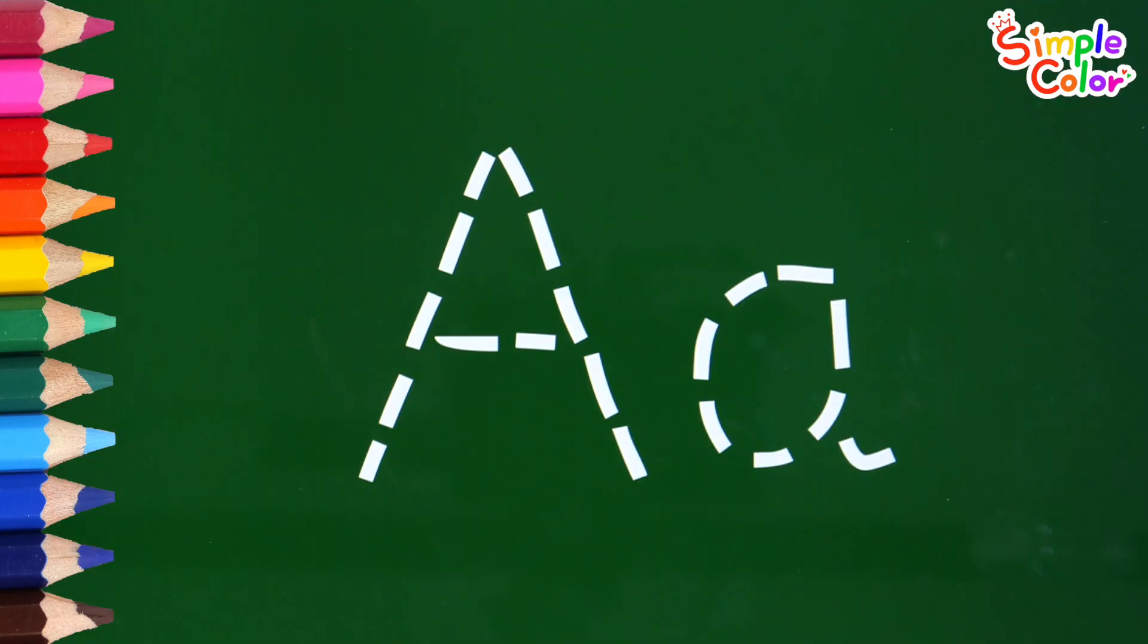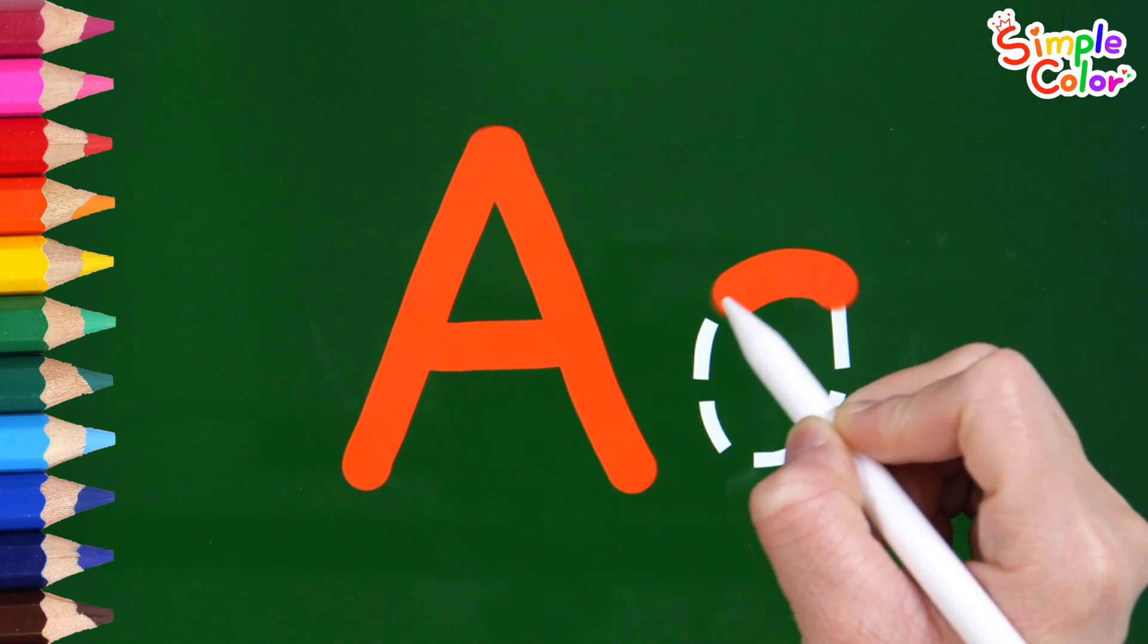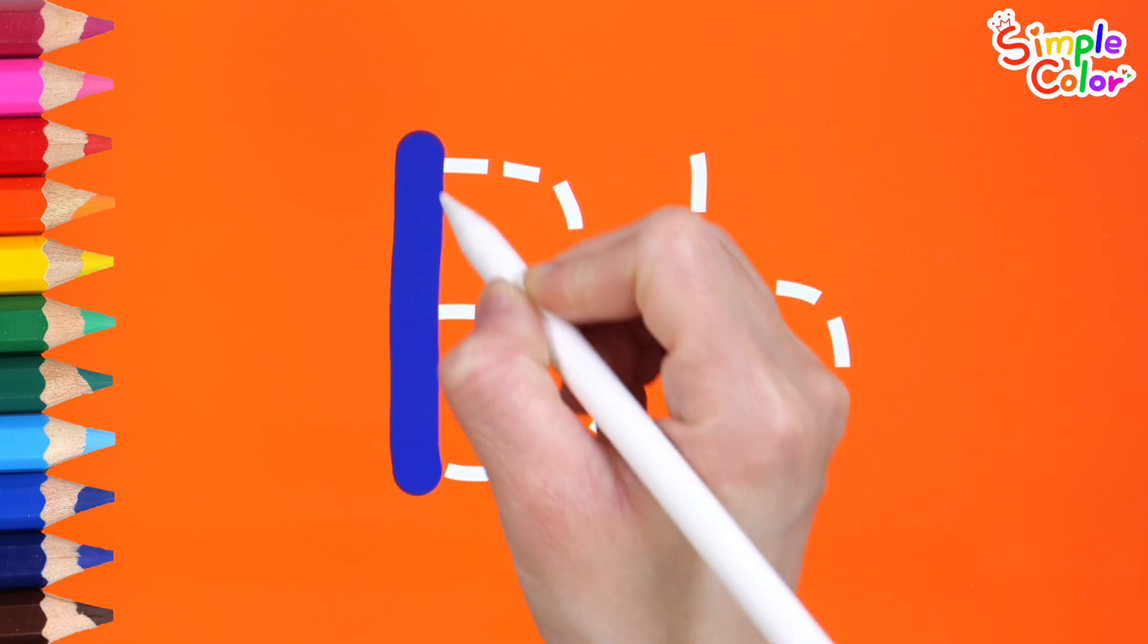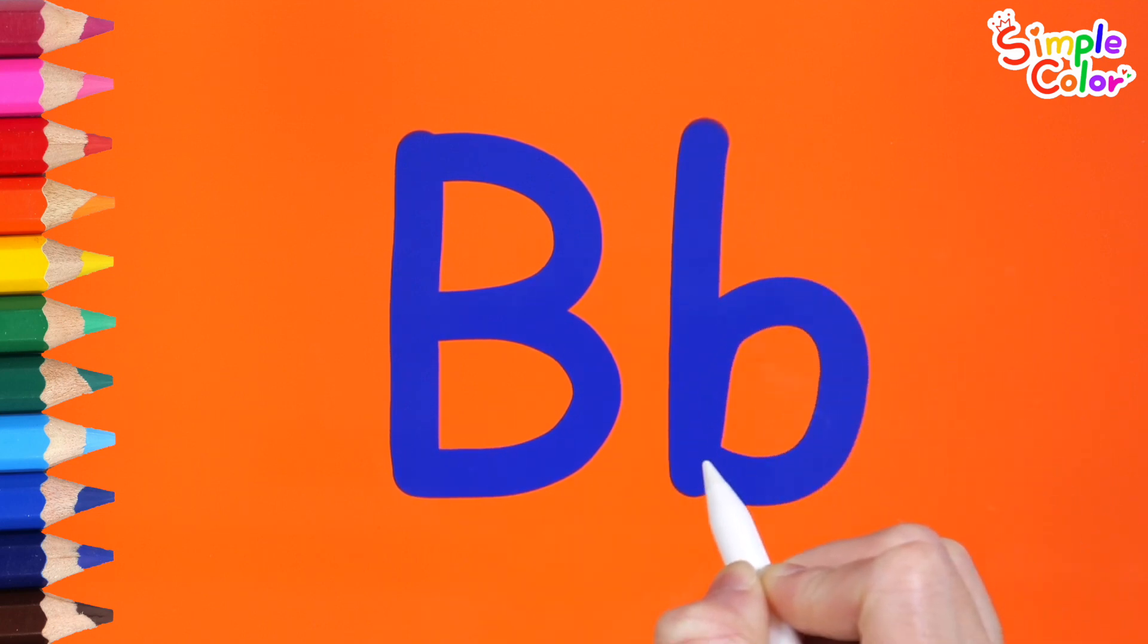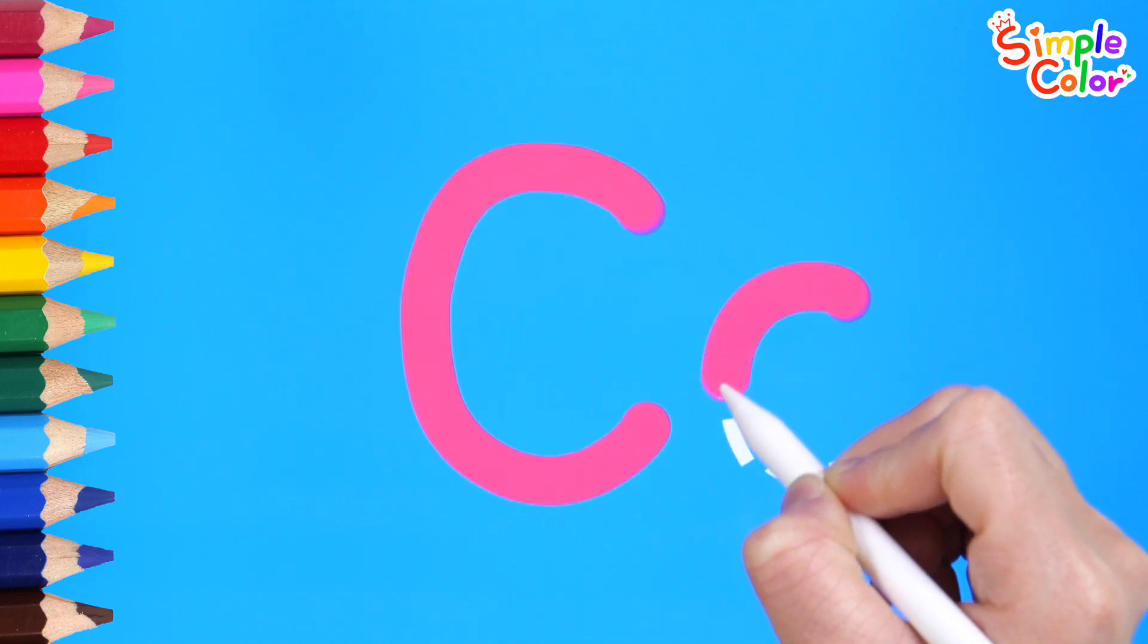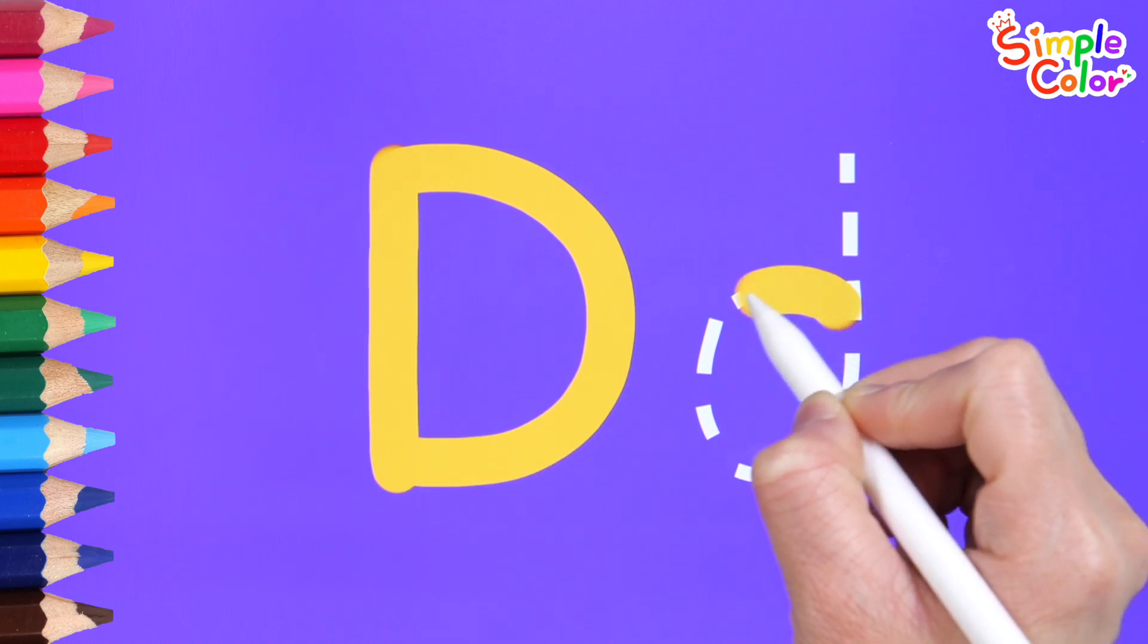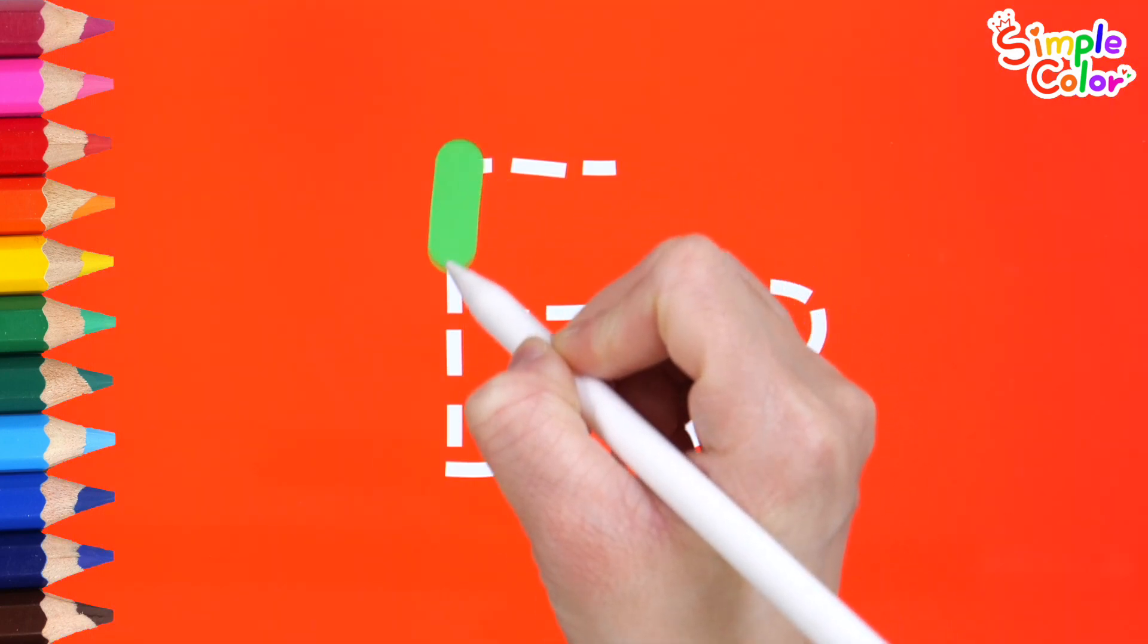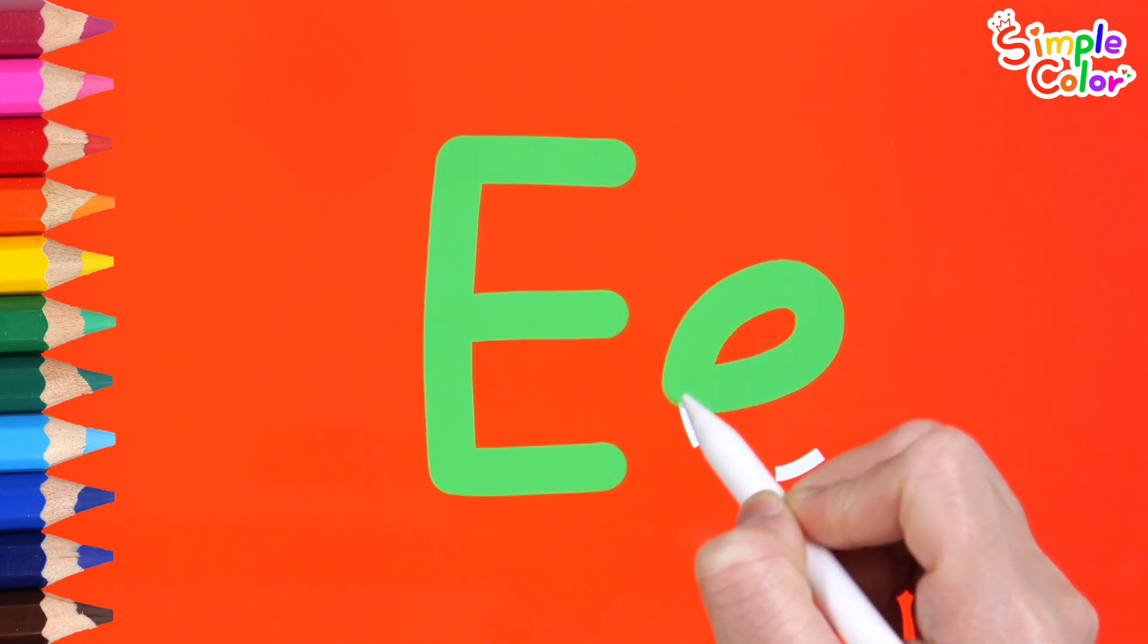Write lowercase letters of the alphabet along the dotted line. A, B, C, D, E.